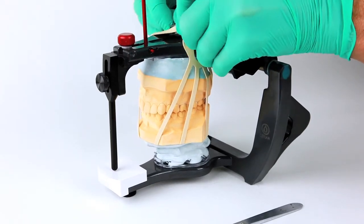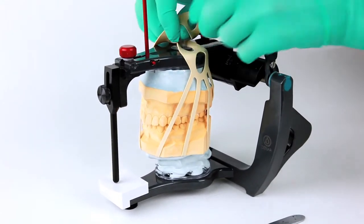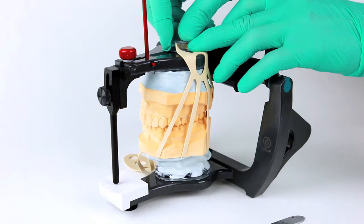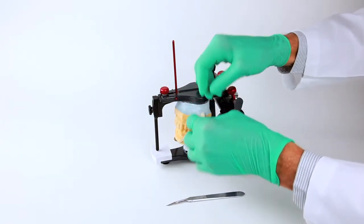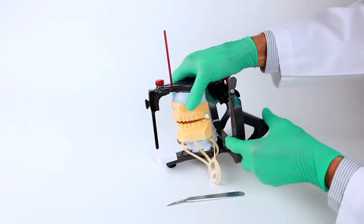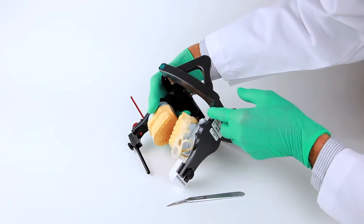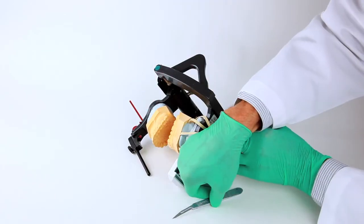After the stone has adequately set, the flexi-mount can be removed from the mounting button on the articulator arm. Caution should be used not to put excessive force on the cast at this point. A second layer of stone should be added to give adequate strength to the cast mounting.